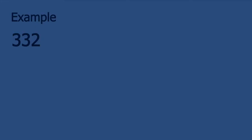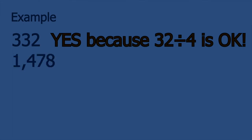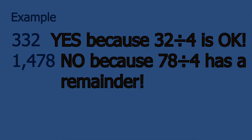For example, 332: we look at the last 2 digits, which are 32. We know that 32 can be divided by 4, so the original number, 332, can be divided by 4. Let's look at another one: 1,478. The last two digits are 78, and if you check, 78 cannot be divided by 4 without a remainder. So the original number, 1,478, cannot be divided by 4 as well.